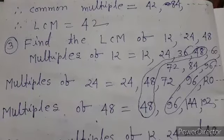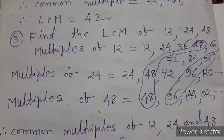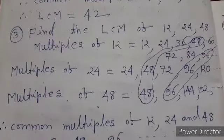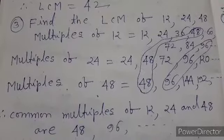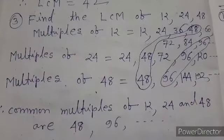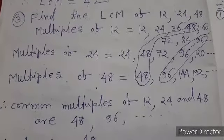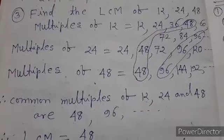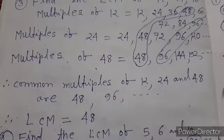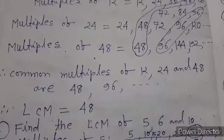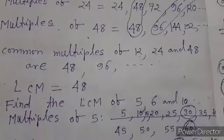In question three, to find the LCM of twelve, twenty-four, and forty-eight, we write the list of all multiples. Multiples of twelve: twelve, twenty-four, thirty-six, forty-eight, sixty, seventy-two, eighty-four, ninety-six. Multiples of twenty-four: twenty-four, forty-eight, seventy-two, ninety-six, one hundred twenty. Multiples of forty-eight: forty-eight, ninety-six, one hundred forty-four, one hundred ninety-two, and so on. We observe that the common multiples are forty-eight and ninety-six. The smallest is forty-eight. Hence, LCM is equal to forty-eight.